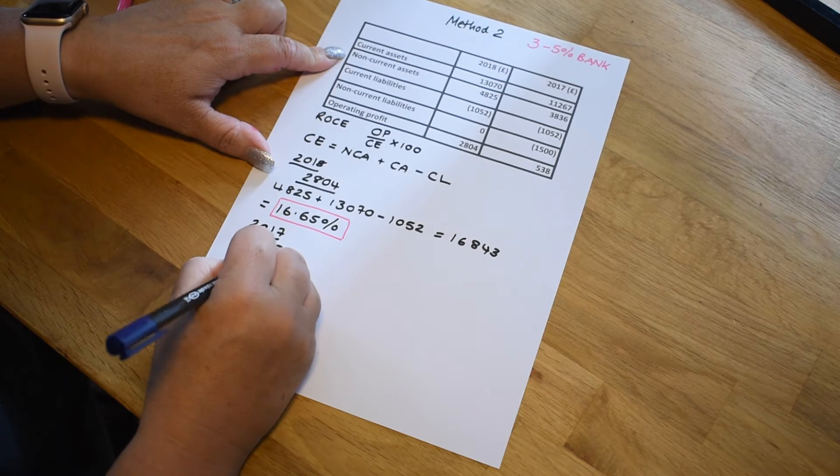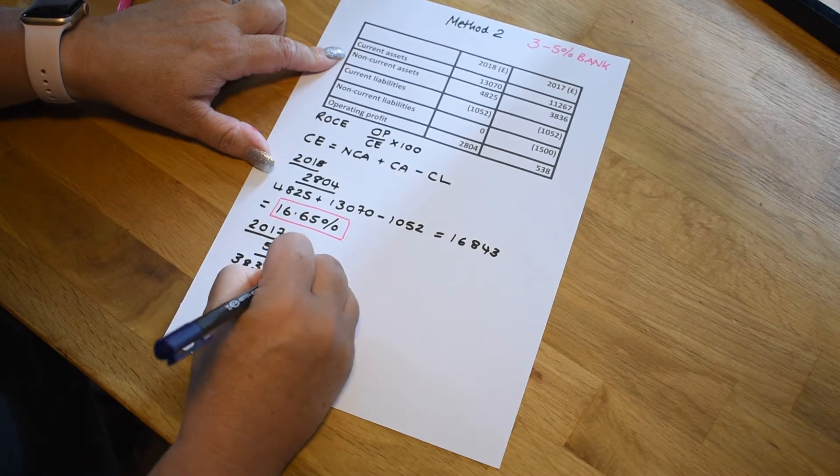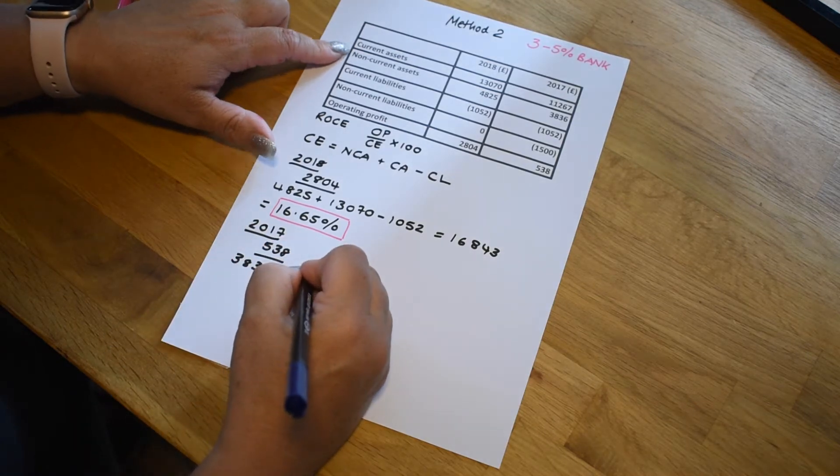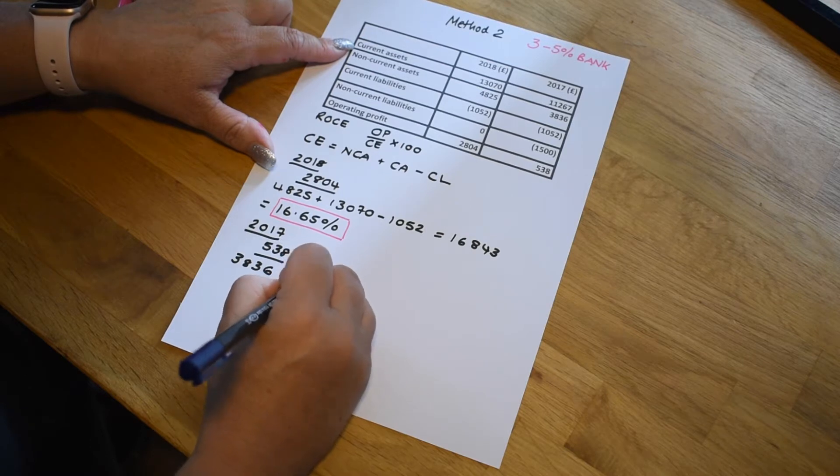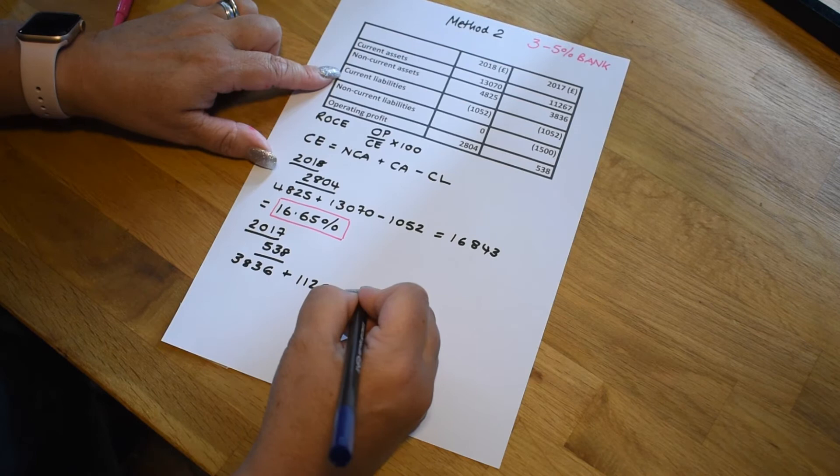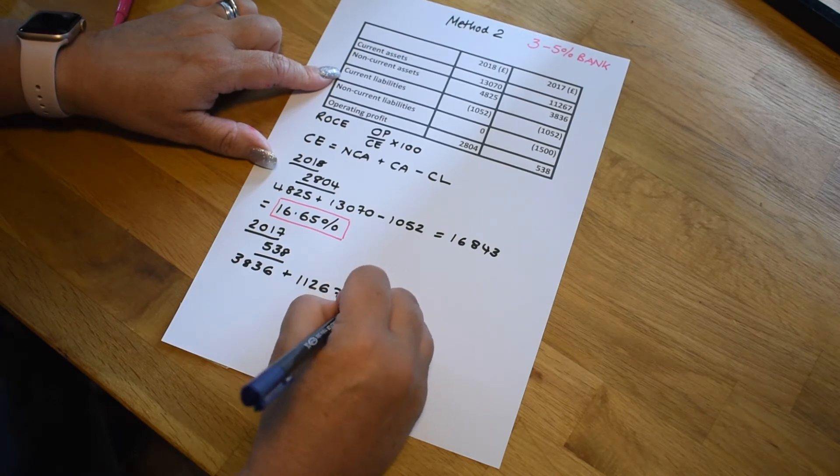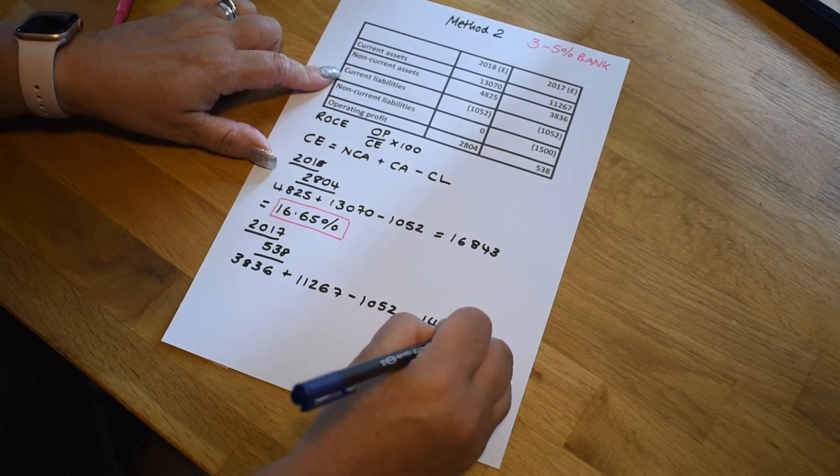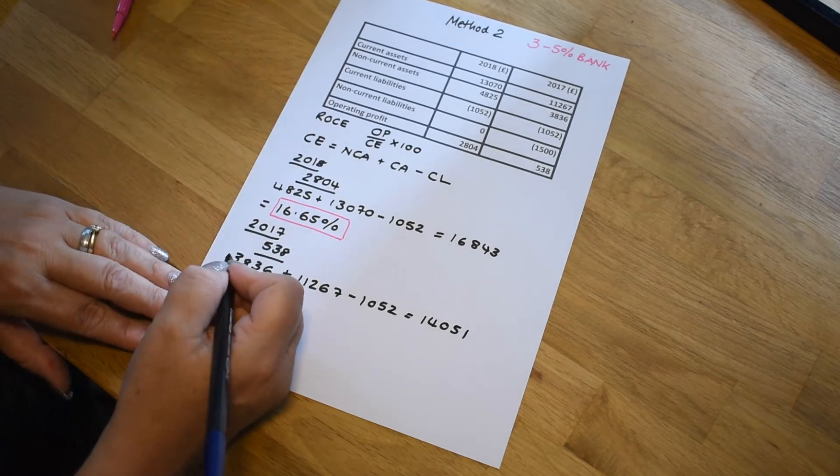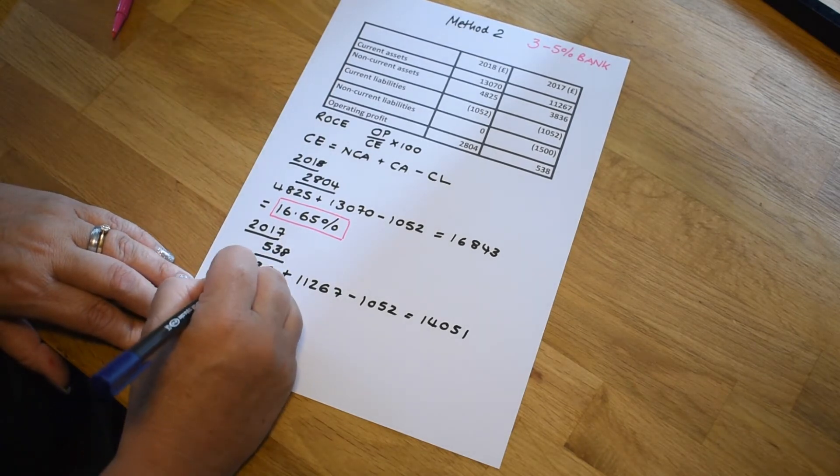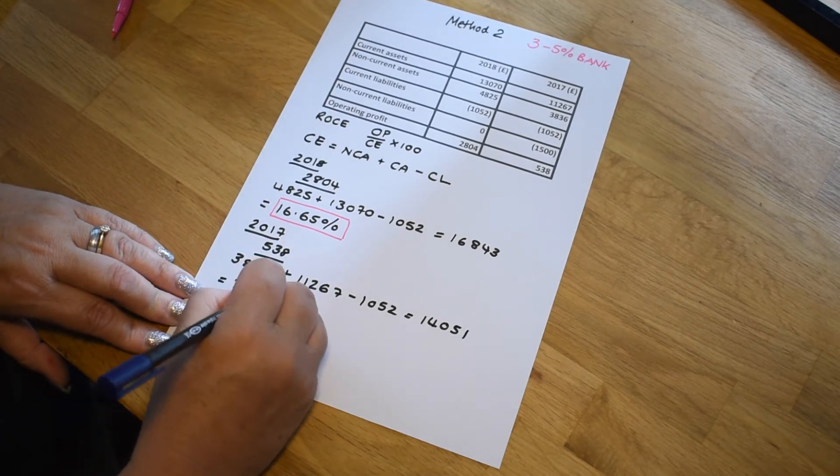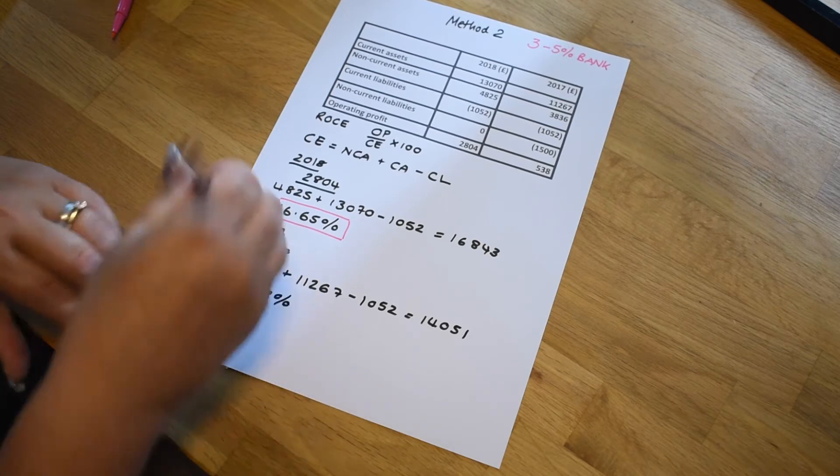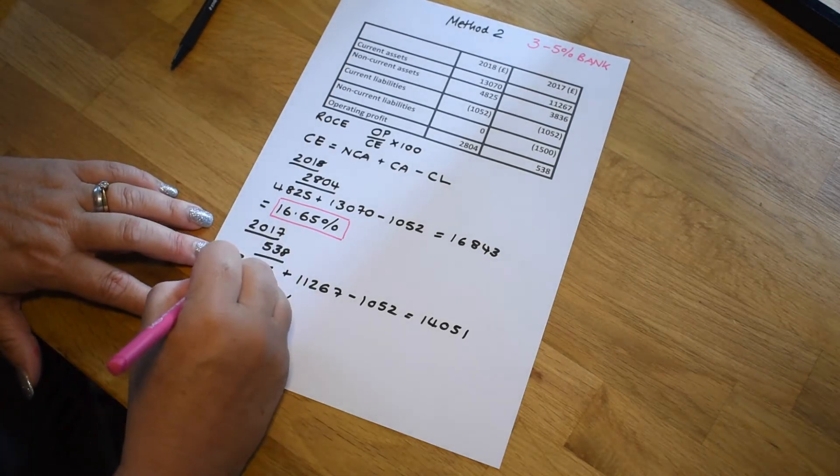And then we now need to get our capital employed figure. So we start with the non-current assets over here, which is 3836. We add it to the current assets, which is 11,267, and then minus off any current liabilities, which is 1052, giving us a result of 14,051. If we put that into the formula, that then equals 3.83%, again rounded up to two decimal places.